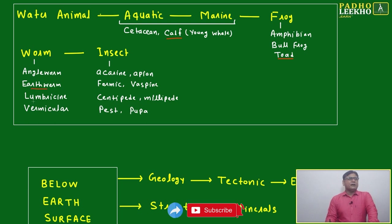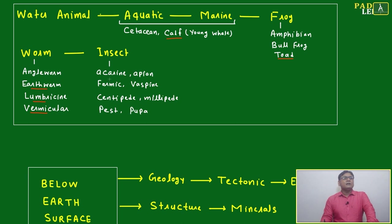Worm and insect. Earthworm, after then lumbricine, vermicular. Next is insect: apion. These two words are using regularly - wasp, pupa. After then pest, we know.